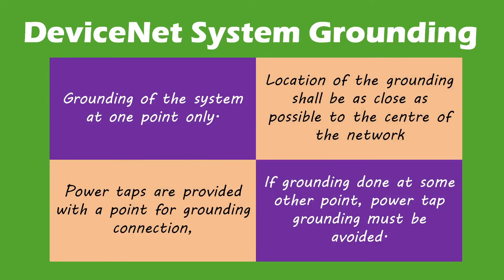In a DeviceNet network, grounding of the system must be done at one point only. The location of grounding should be as close to the physical center of the network as possible. The grounding connection should be made at a power tap that has a terminal for grounding. If the network is connected to ground at some other point, ground shall not be provided at the power tap. It must be ensured that only a single ground connection exists in the network.